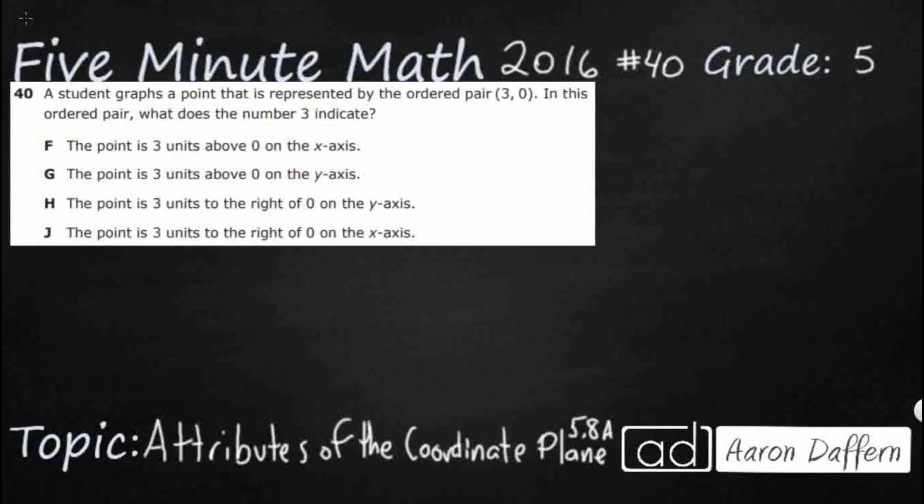So, we have a student that is graphing a point represented by the ordered pair 3, 0, and we're trying to figure out what does that 3 indicate in that ordered pair.